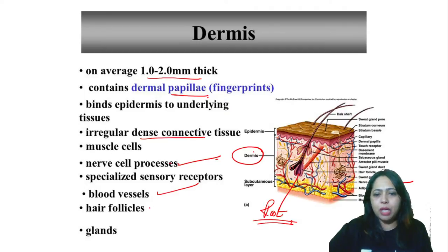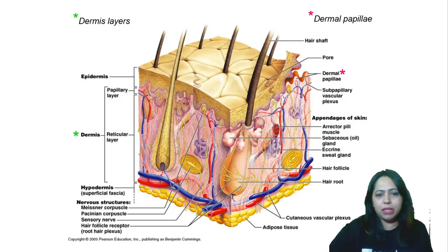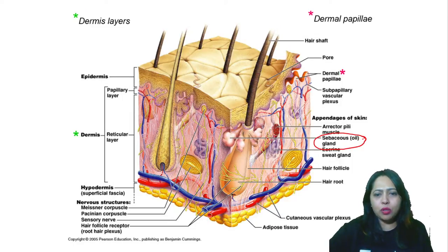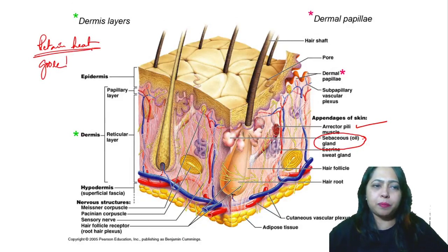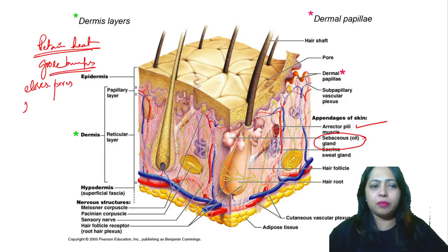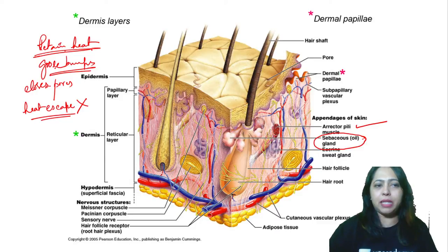Attached very closely to the hair follicle is also the sebaceous gland — the oil gland — which enriches the hair follicle and helps it grow and stay healthy. The sebaceous gland is connected to a muscle called the arrector pili muscle, which helps in getting those goosebumps on the skin. When it is very cold, we get goosebumps — that closes the pores and does not allow heat to escape, so heat retention occurs.